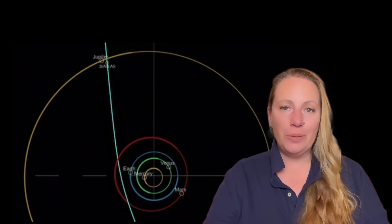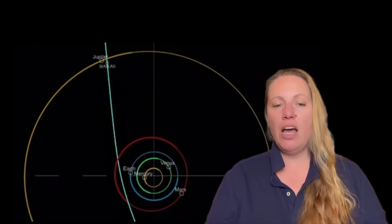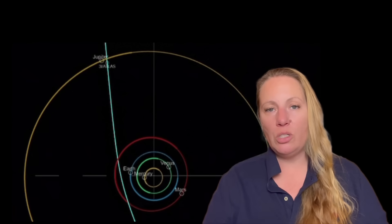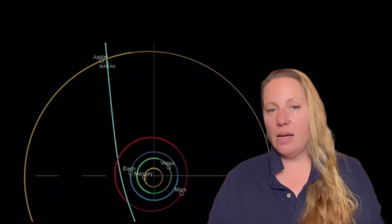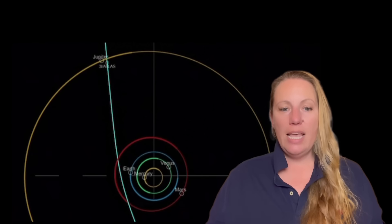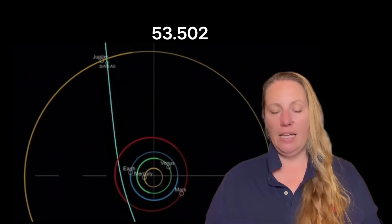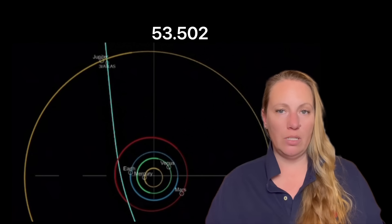Next year, on March 16th, 2026, Jupiter will be 783.8 million kilometers away from the sun. And now we're plugging the numbers into the equation. Jupiter's hill radius is 53.502 million kilometers.